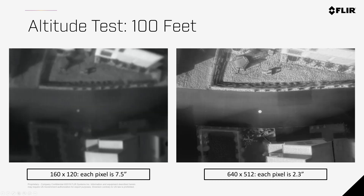At 100 feet, each pixel on the ground with the 160x120 camera represents 7.5 inches. For thermal, you want to get a minimum of 3x3 pixels on your target for detection and 5x5 pixels to even consider measuring its temperature. That means at 100 feet, the anomaly would have to be more than 22 inches to detect and over 3 feet to measure the temperature with a 160x120 camera. This is not conducive to good and efficient inspections.